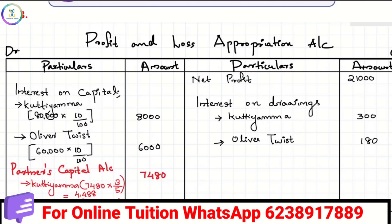When you start the Profit and Loss Appropriation Account, you will have a net profit, but you could also have a net loss.